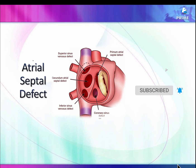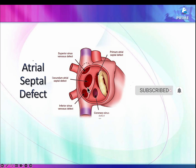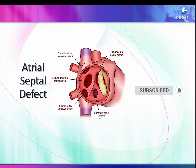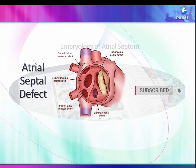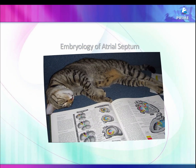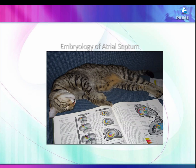ASD can be divided into sinus venosus ASD, secundum ASD, and ostium primum ASD. Which ASDs can be picked up on the fetus and which cannot — that's what I'm going to describe right now. I'll not waste time on embryology of an ASD, which is going to make you sleep.